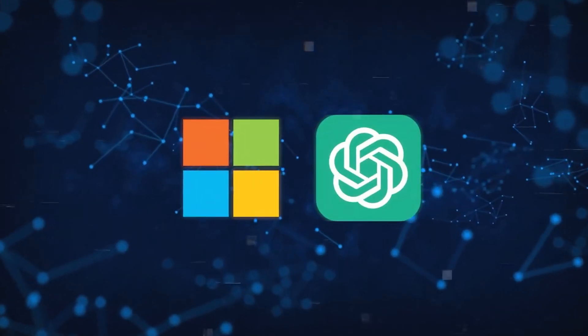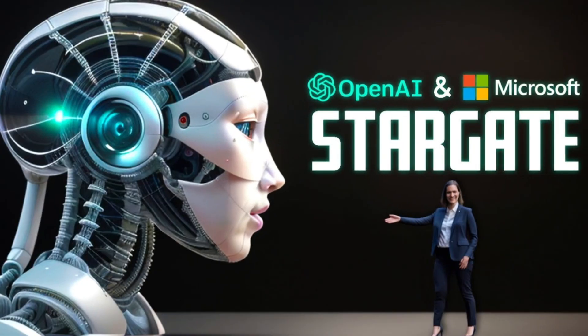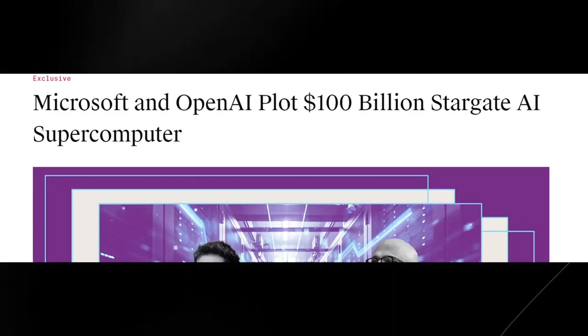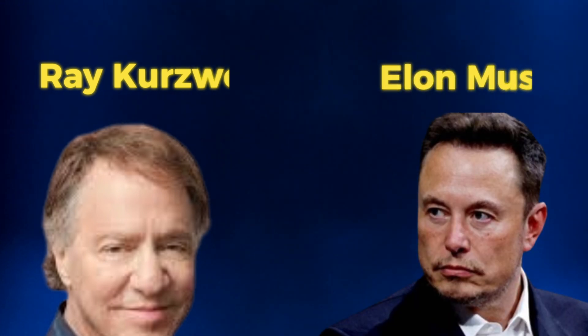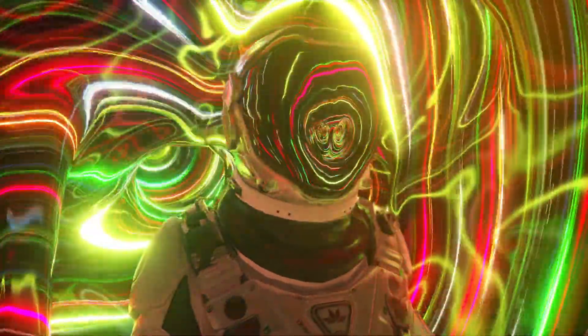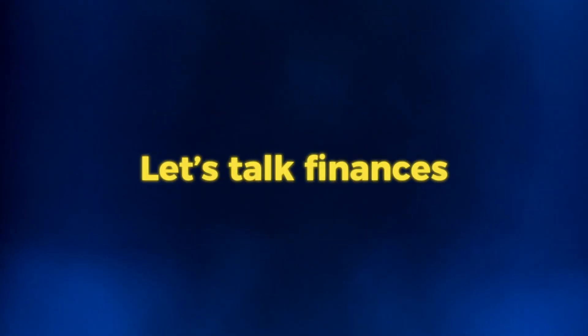According to the leaked information, Microsoft and OpenAI have discussed the potential for Stargate to serve as a launchpad for Superintelligent AI by 2030. This ambitious timeline aligns with predictions from industry luminaries like Ray Kurzweil and Elon Musk, who foresee the advent of Superintelligent AI within the next decade.